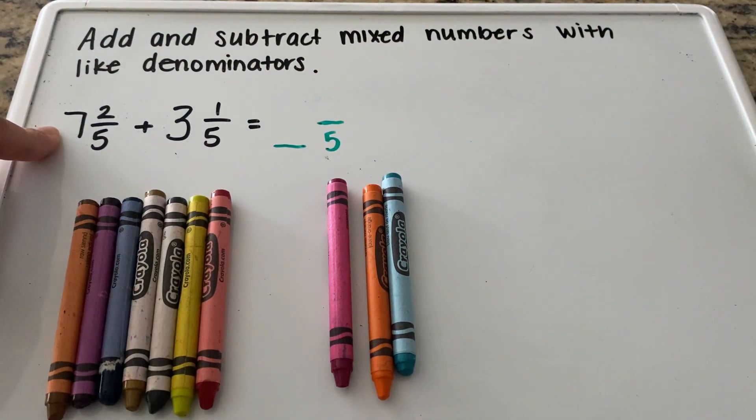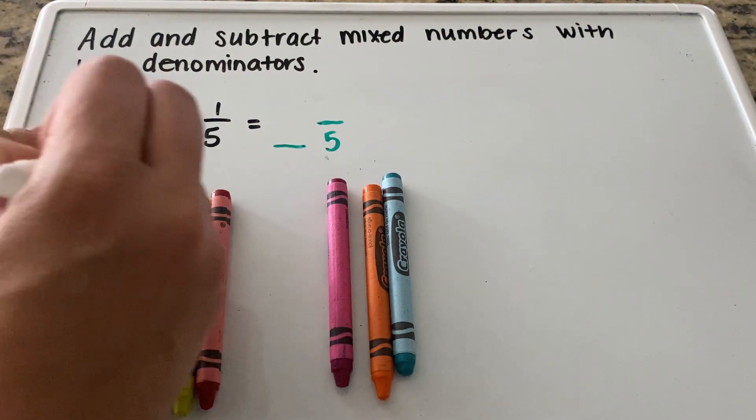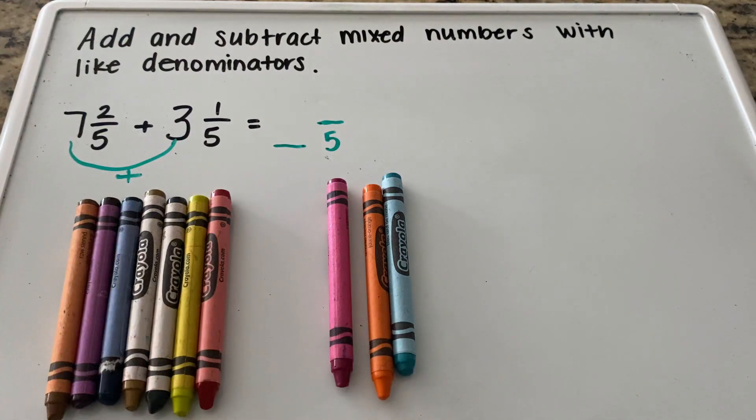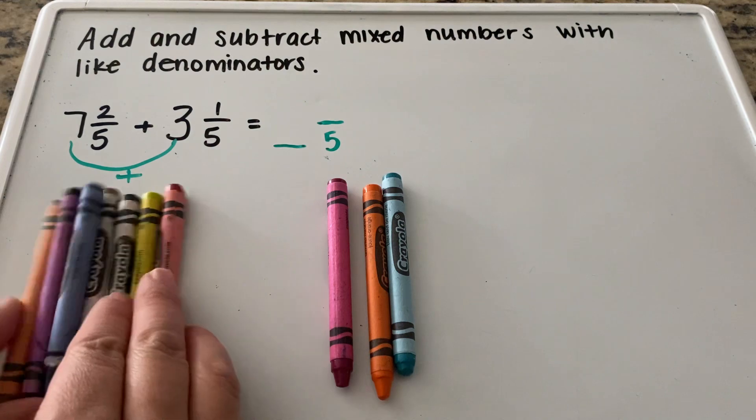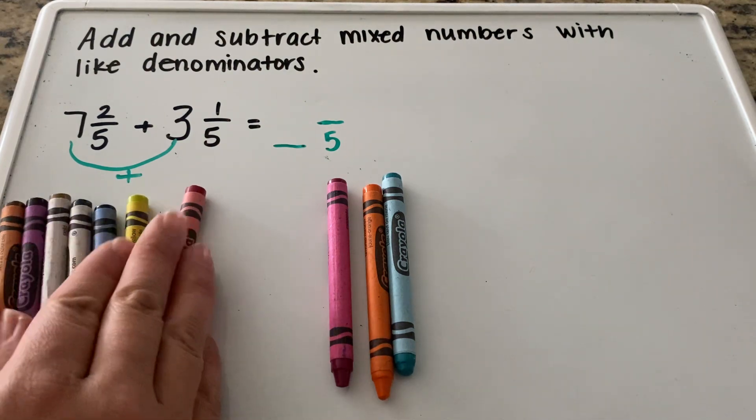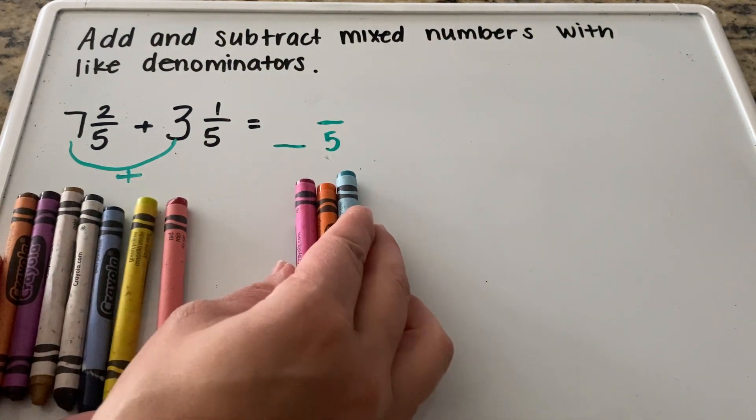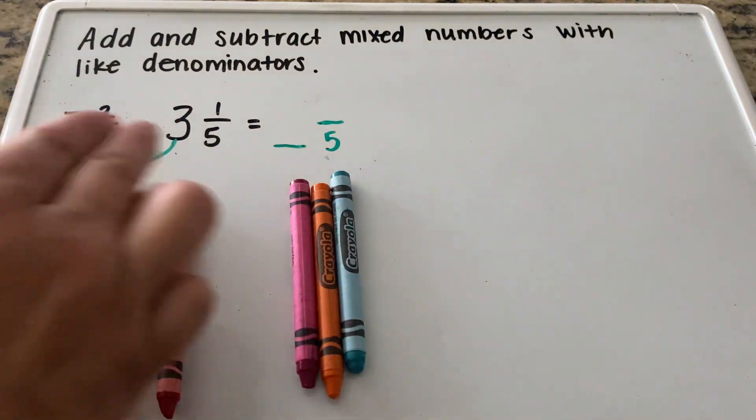We take our whole number, we do our whole numbers first. So we have our whole number seven and our whole number three and we're going to add those together. You can take any household item. I went ahead and did crayons. So I have seven crayons over here on my left plus three more crayons. Seven plus three.